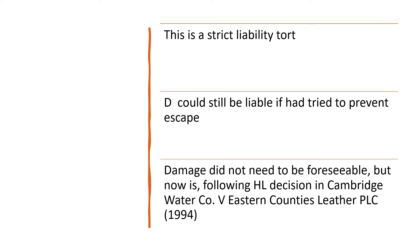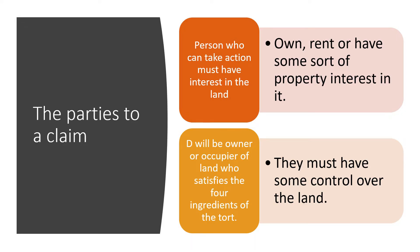This is a strict liability tort, and the defendant could still be liable even if he tried to prevent the thing stored on the land from escaping. We need to establish who can claim: the person who takes action must have an interest in the land — similar to nuisance — so they can own, rent, or have some sort of proprietary interest in it. This means partners and so on of the owners will not be able to claim, similarly to nuisance claims.